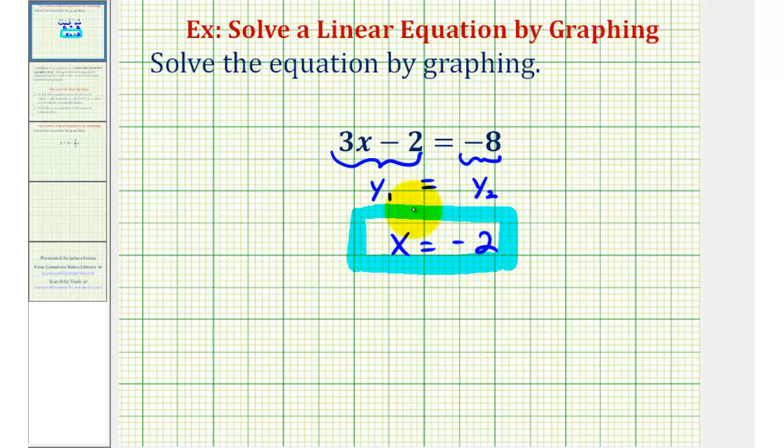Let's go ahead and verify this algebraically by substituting negative 2 for x to make sure it satisfies the equation. We would have 3 times negative 2 minus 2 equals negative 8.